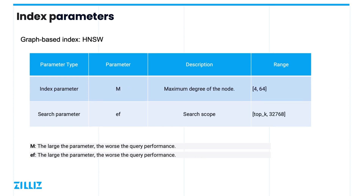The HNSW index has two main parameters that affect query performance. The first is M, which specifies the out-degree of each node, similar to RNSG — increasing this parameter results in slower searches. The second is EF, which dictates how far to search, with a smaller value resulting in a faster search. While increasing both EF and M will result in higher recall, it does come at the cost of slower search speeds.